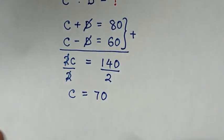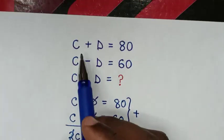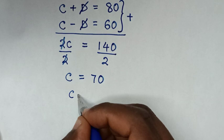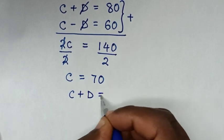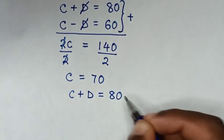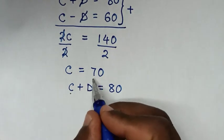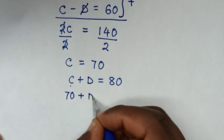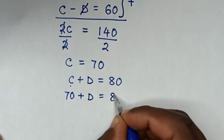Then from the first equation, which is this, C plus D equals 80, we substitute the value of C, which is 70. So it will be 70 plus D equals 80.